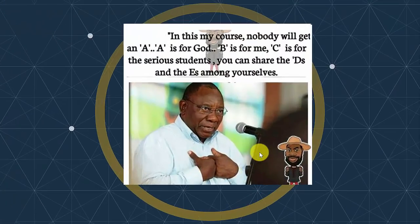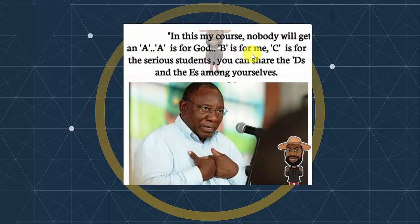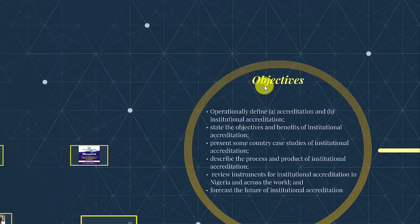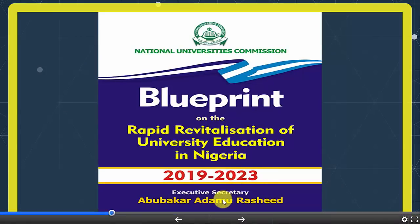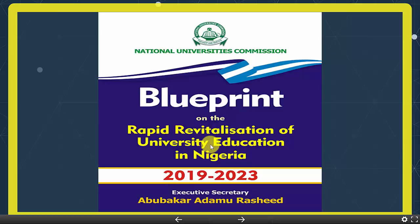Before we begin, consider this lecturer telling his class: in this course, nobody will get an A, because A is for God; B is for me, the lecturer; C is for the students; and you can share the D's and E's among yourselves. This means we need to revitalize our system. The Executive Secretary of the National Universities Commission, Abubakar Damu-Rashid, has come up with the Rashid Revitalization Plan — a blueprint on the rapid revitalization of university education in Nigeria. By 2023, we should have the Nigerian university system rapidly revitalized.